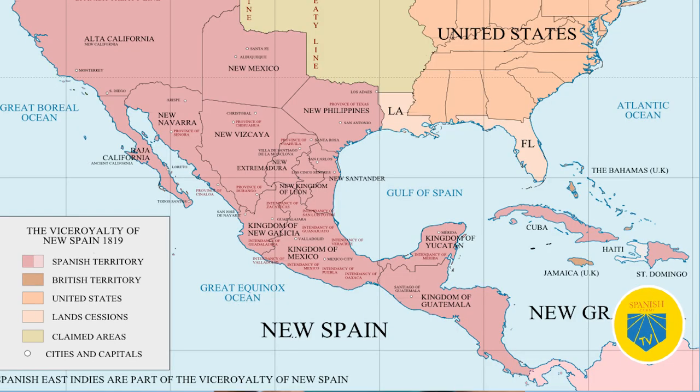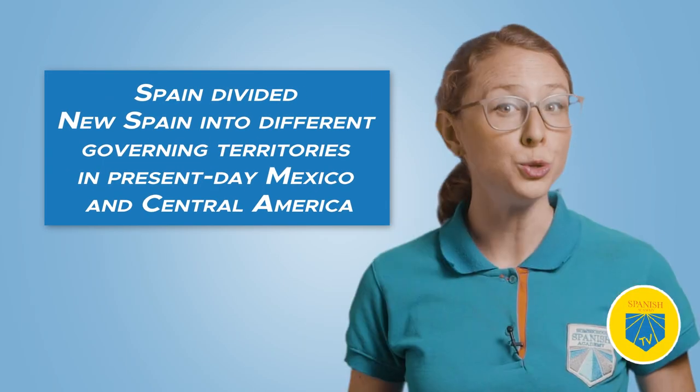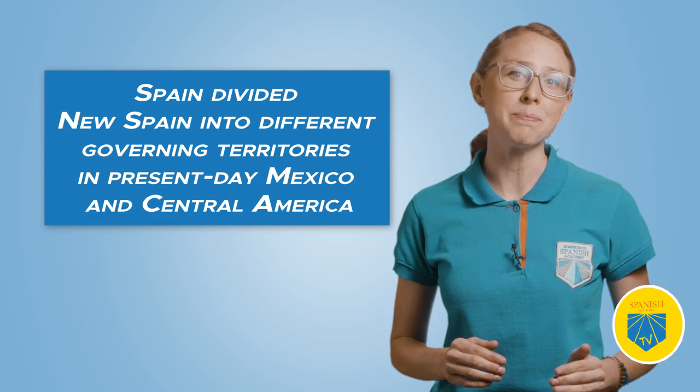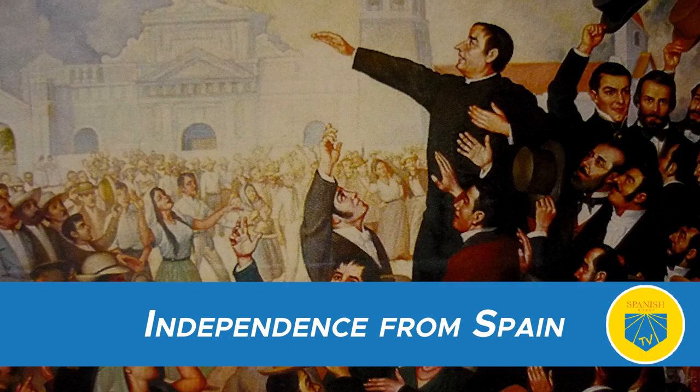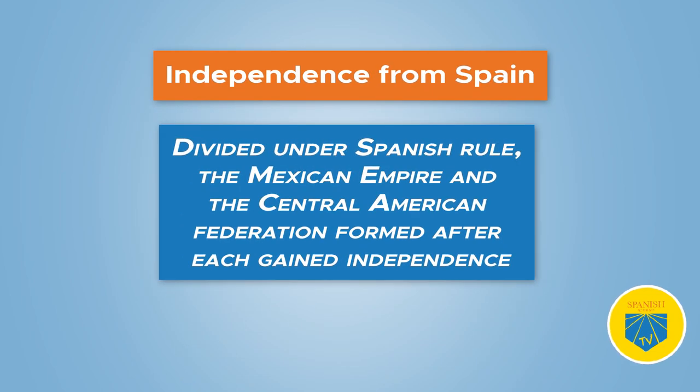The first Spanish settlements started appearing in the 1500s, leading to violent clashes and wars between the indigenous people of the Aztec and Maya civilizations and Spanish conquistadors. The Spanish divided their kingdom into New Spain — from the U.S. to the border of Panama — and New Granada — from Panama to South America. Spain further divided New Spain into different governing territories in present-day Mexico and Central America. Even when Mexico and Central America gained independence from Spain, they did so separately.